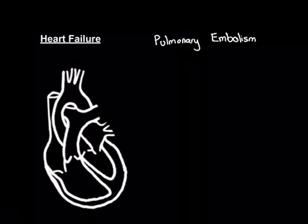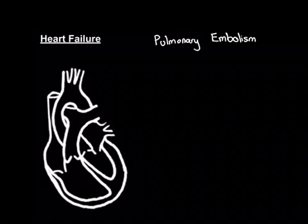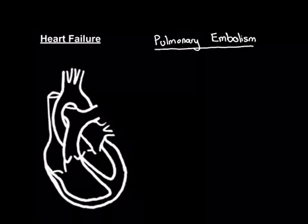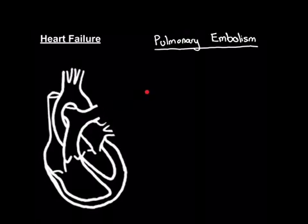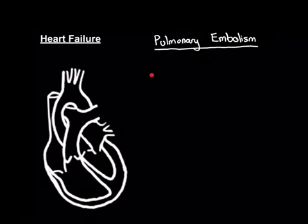Remember, pulmonary embolism is the name for having a blood clot in the pulmonary arterial system. Blood clots can form in the systemic venous system, typically in the veins in the leg. Those blood clots can fly off, come up the inferior vena cava, go through the right atrium, then through the right ventricle, get flown off into the pulmonary circulation, and continue until they reach a blood vessel too small to travel down.